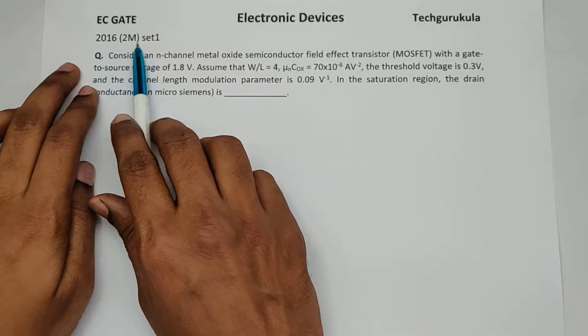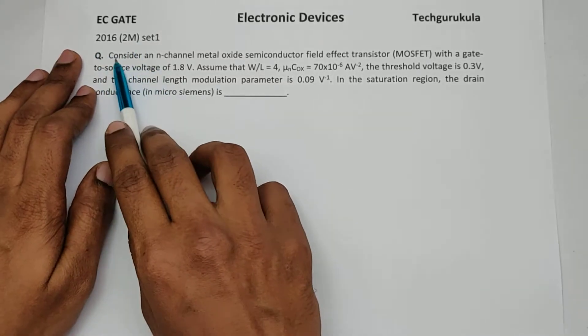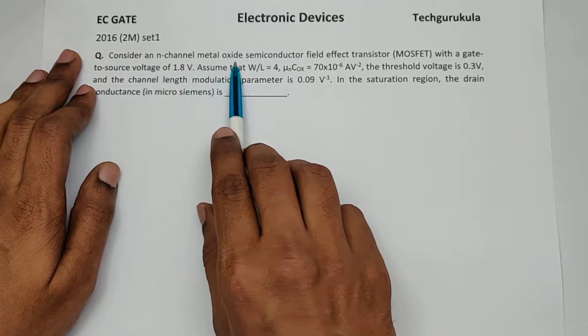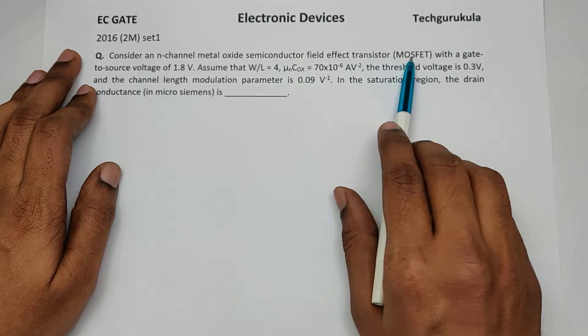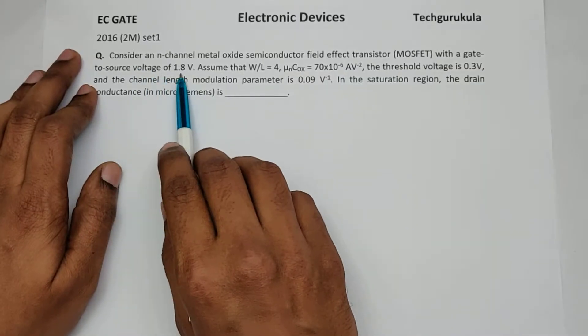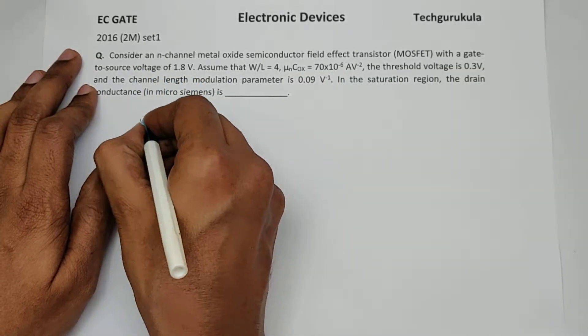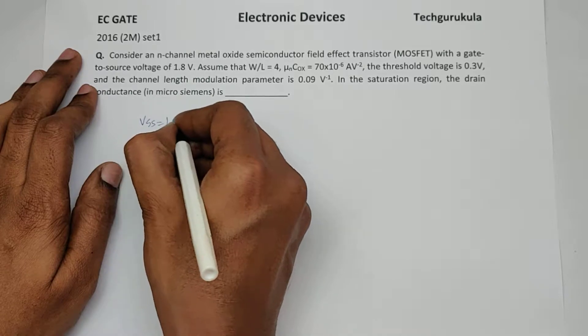This question came in 2016 for two marks. The question is: consider an n-channel metal oxide semiconductor field effect transistor with a gate-to-source voltage of 1.8V, VGS equals 1.8 volt.